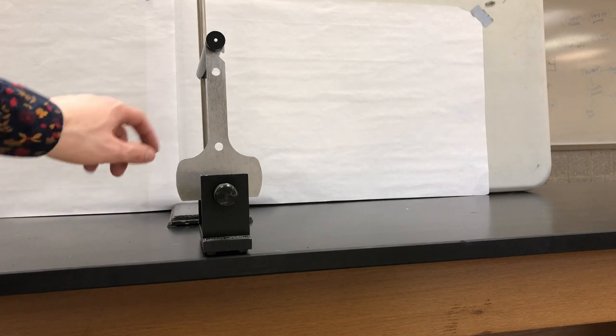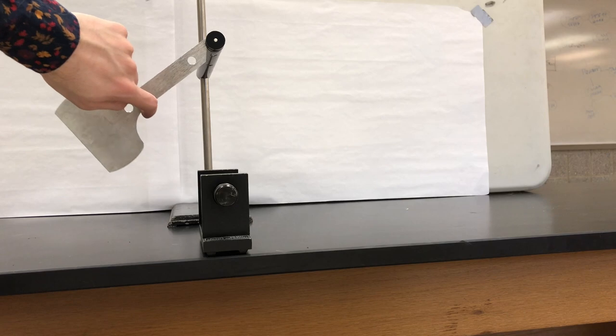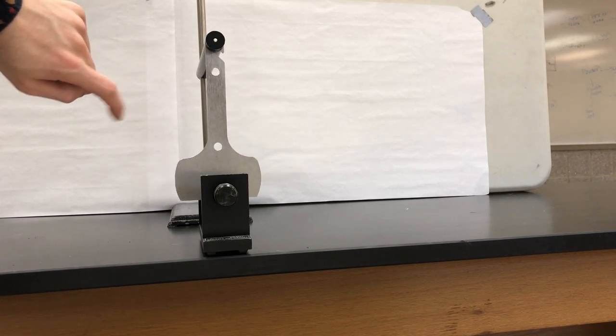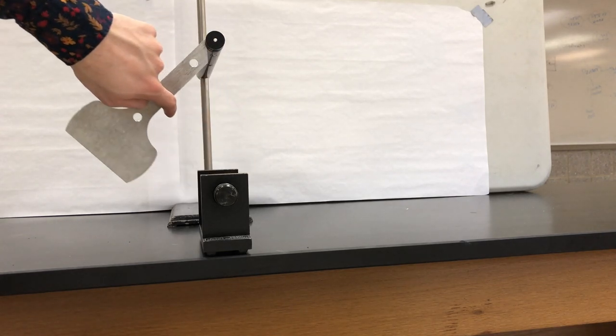Now if you remember when I swung this before, it swung pretty freely. Now that it's going to swing between those two poles, we'll see the magnetic induction phenomena. It definitely slowed way down, didn't it?